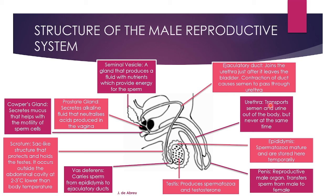The urethra transports semen and urine out of the body through the penis, but never at the same time. The penis is the male reproductive organ, and it transfers sperm from male to female during sexual intercourse.